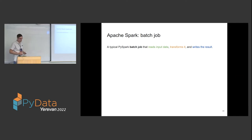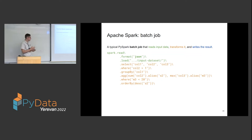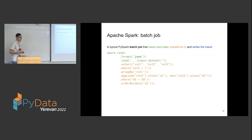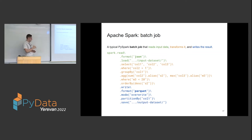Let's look at a typical PySpark batch job that reads data from somewhere, makes simple transformations, and writes the results. This is how we would read data in JSON format from object storage. Then we do different transformations — you can see this looks similar to SQL, using functions like select, where, group by, and aggregate functions like sum and max. We chain those to express our business-level transformations. At the end we write to another location, in this case in Parquet format partitioned by certain columns so it's easier to access later. This simple piece of code represents a distributed processing job.